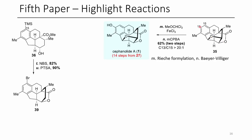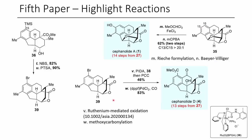Another reaction they did was a Rieche formylation to install an aldehyde on carbon-13. Treating that aldehyde under Baeyer-Villiger conditions actually affords a phenol — as covered in a previous video on Baeyer-Villiger oxidations. They also performed an obscure ruthenium-mediated oxidation to convert a benzylic position to a ketone in 46% yield, selectively, in the presence of two other untouched benzylic positions. Subsequently, they did a methoxycarbonylation via palladium-mediated carbon monoxide insertion into a bromide — quite an impressive overall transformation with a lot of useful chemistry throughout the paper.